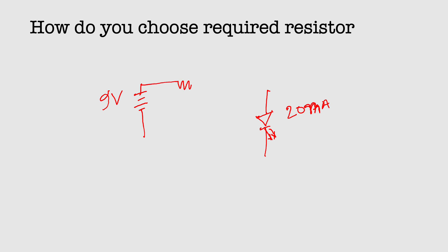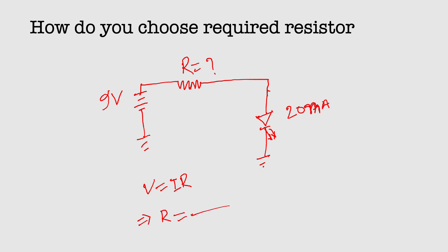You connect the 9-volt battery with a resistor in series with the LED and you want to find the value for this resistor and its tolerance, and what type of resistor you need to use. It's very simple. We know we need to pass only 20 milliampere current, so using Ohm's Law V equals IR.